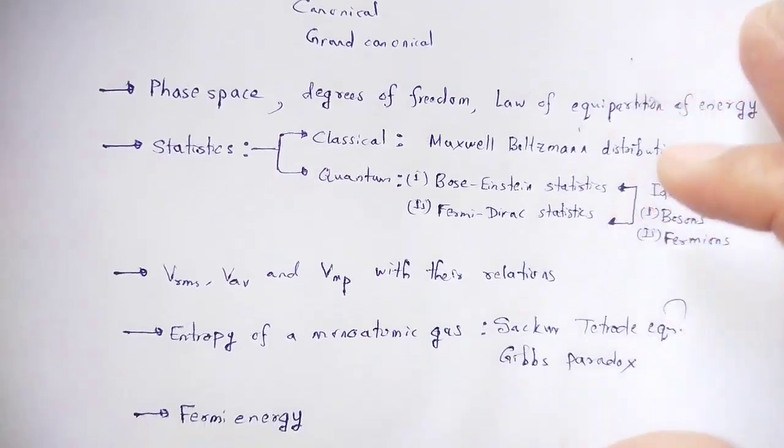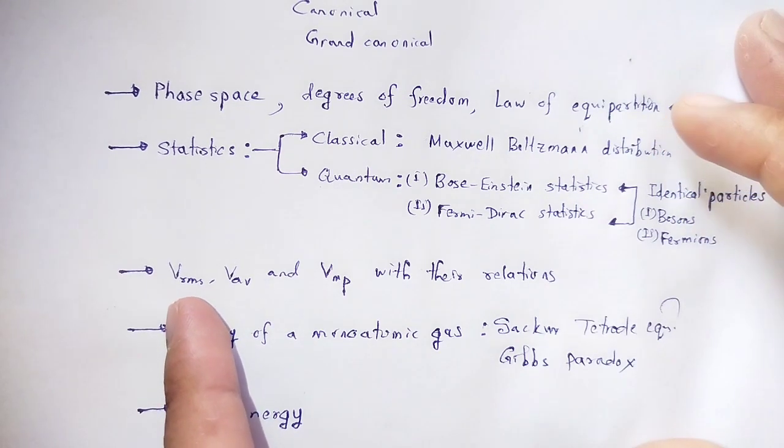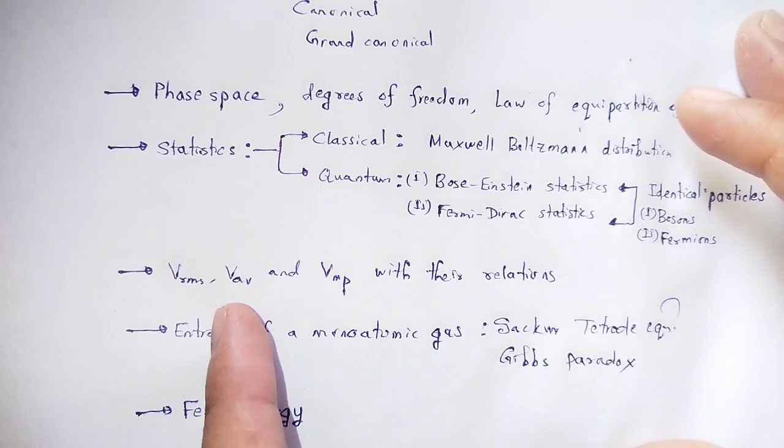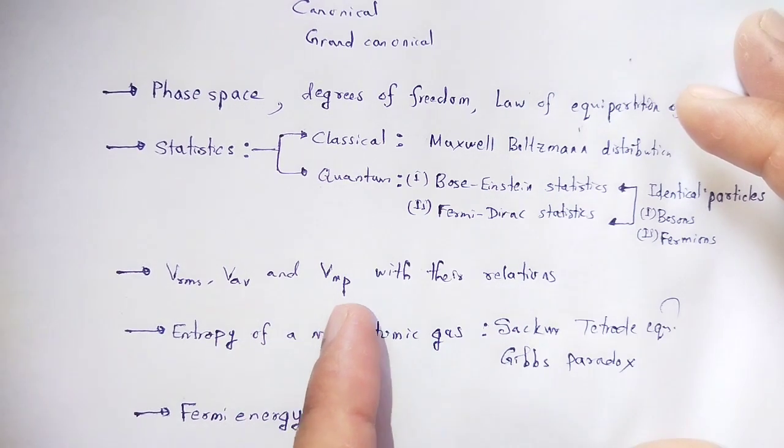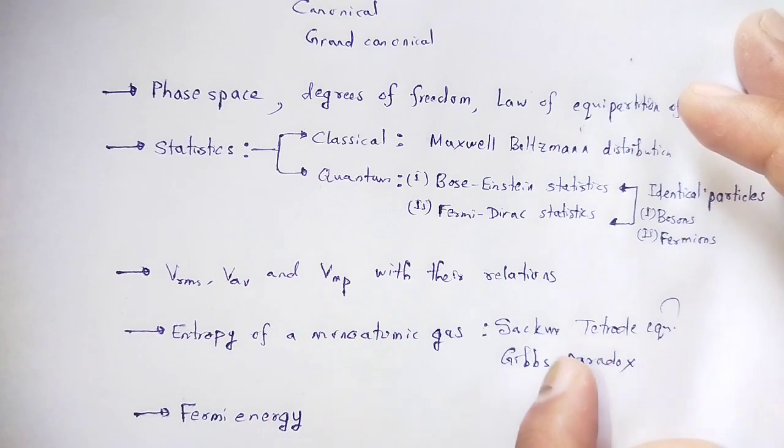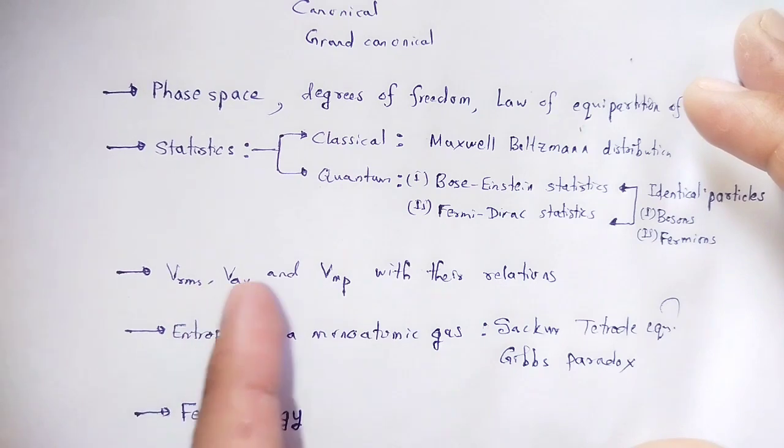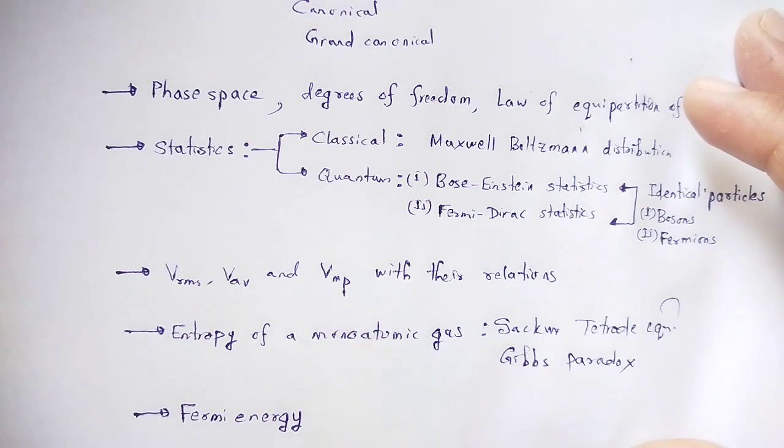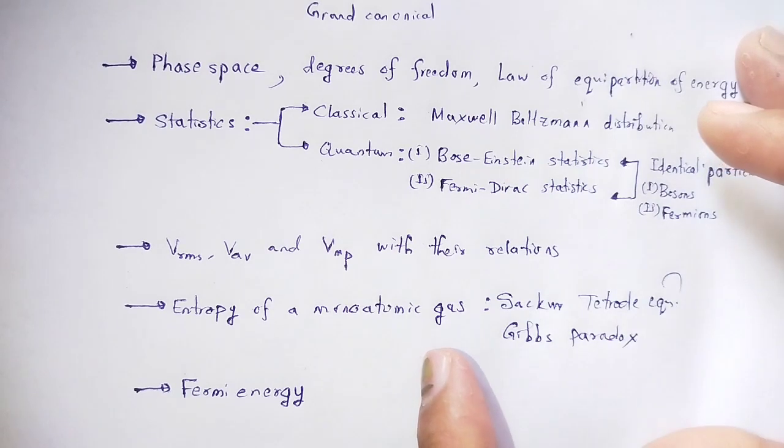Next topic: v_rms (root mean square velocity), v_average (average velocity), and v_most probable (most probable velocity) - their mathematical expressions and relations between these three.